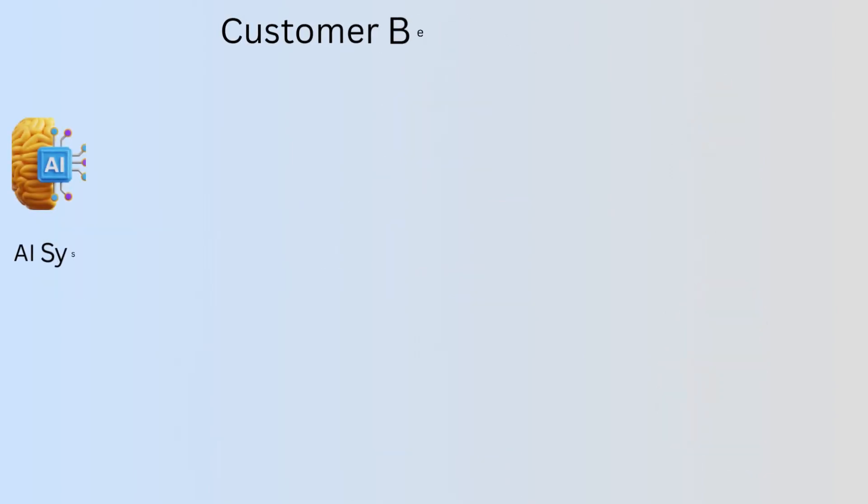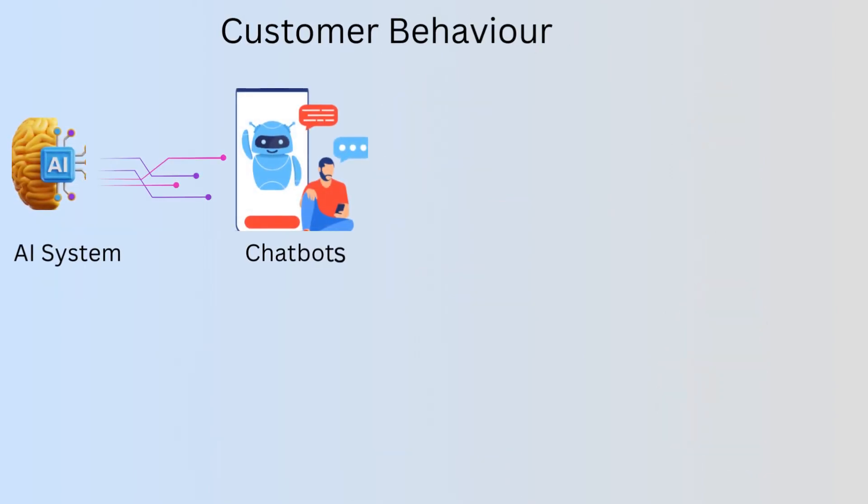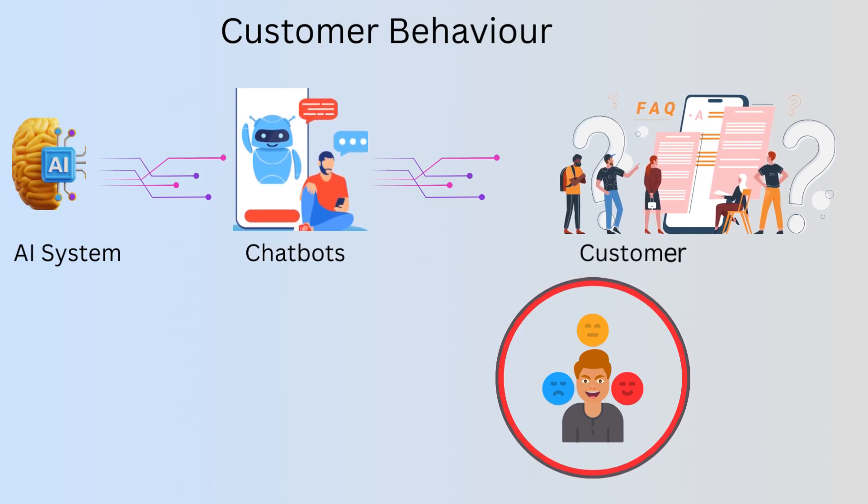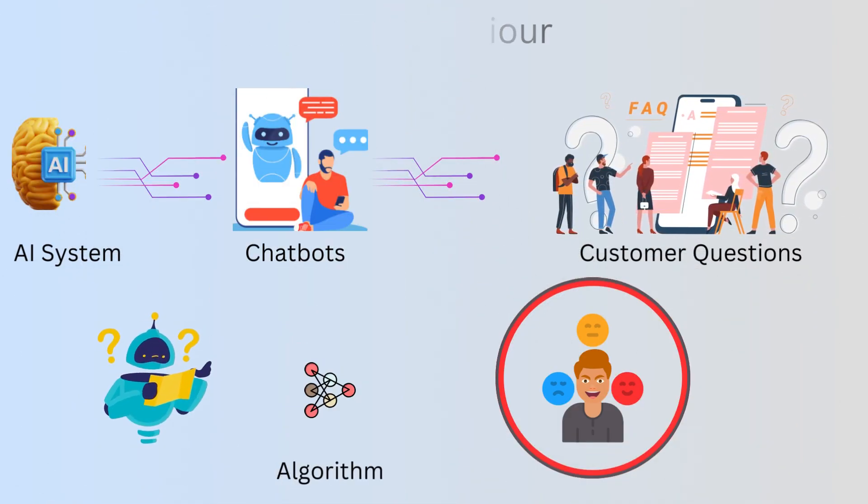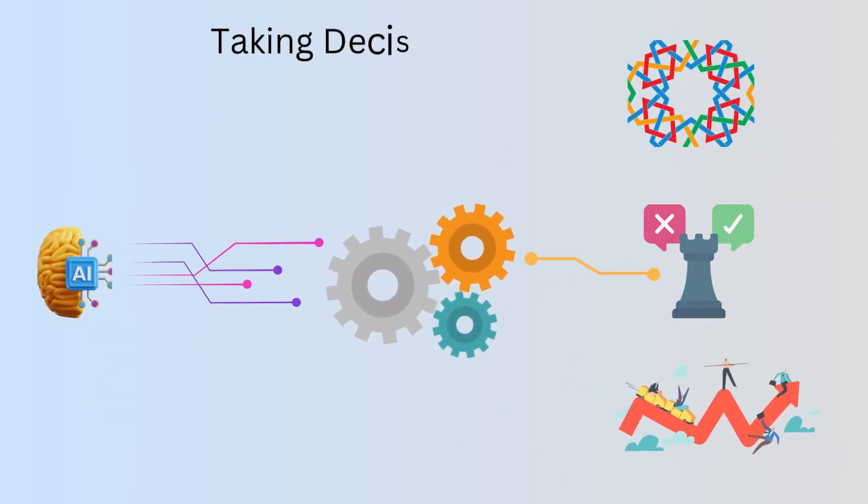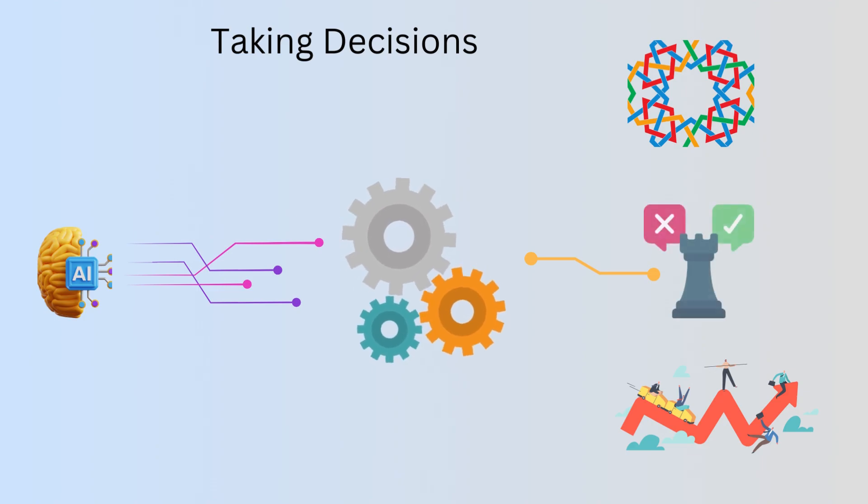AI systems are used to train chatbots to answer customer questions more effectively, and to develop algorithms that can predict customer behavior. AI can also be used to create machines that can make decisions in complex and uncertain environments.